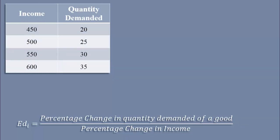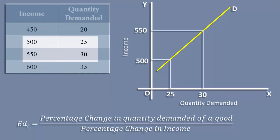This is an income demand schedule. As income increases, quantity demanded also increases. Let us measure income elasticity in the income range of 500 to 550 rupees. With an increase in income, quantity demanded goes up from 25 units to 30 units.